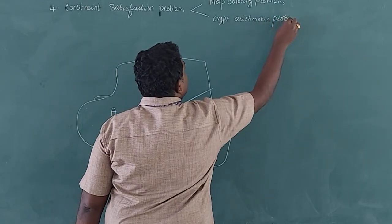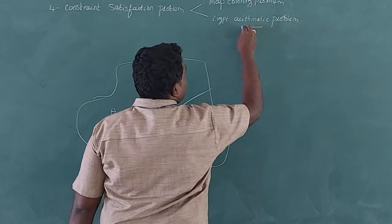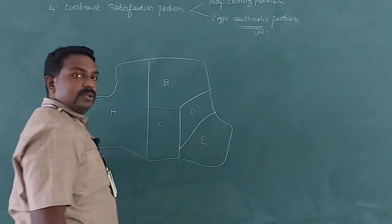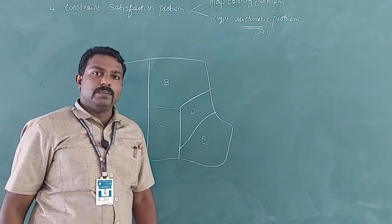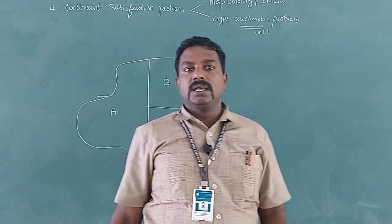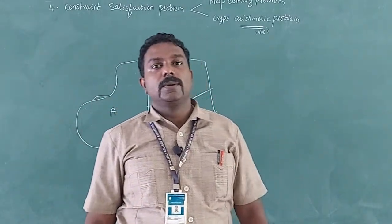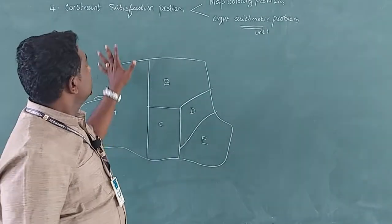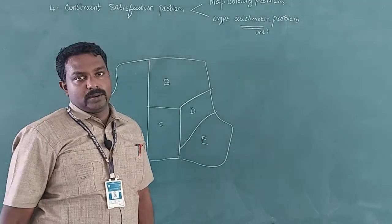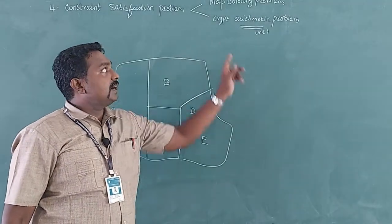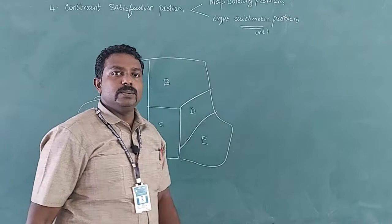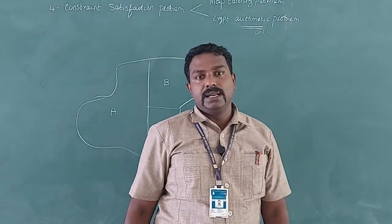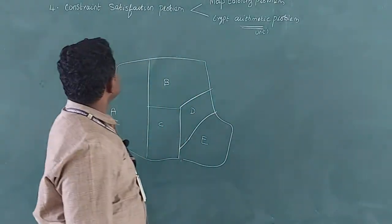This Crypt Arithmetic Problem I have already taught you in Unit 1 — the problem like ONE plus ONE equals TWO, send more money. I hope you remember that. So in this class, I am going to teach you about Constraint Satisfaction Problem with Map Coloring Problem, since I have already covered Crypt Arithmetic in Unit 1.